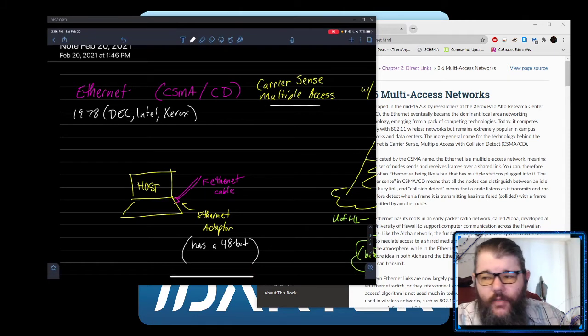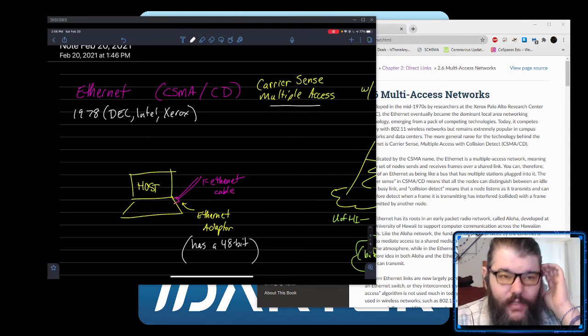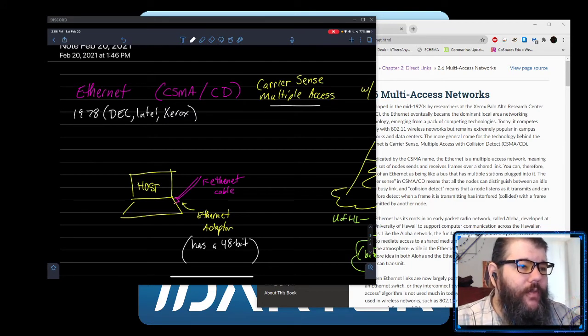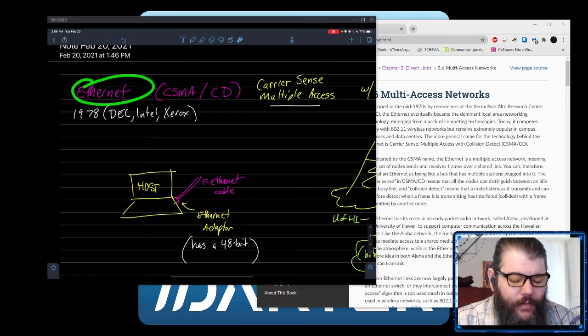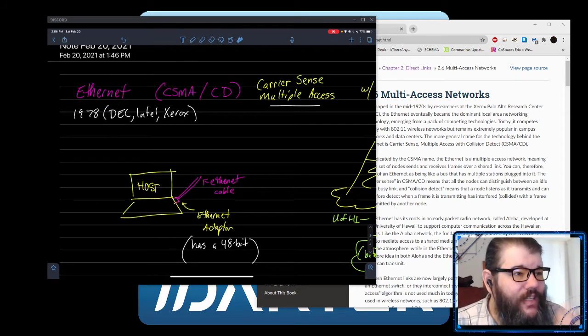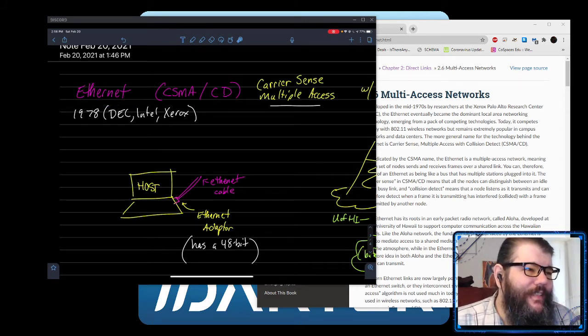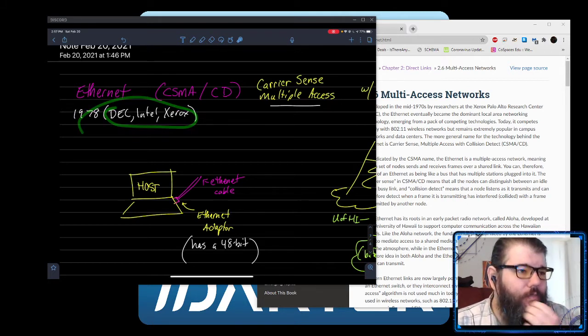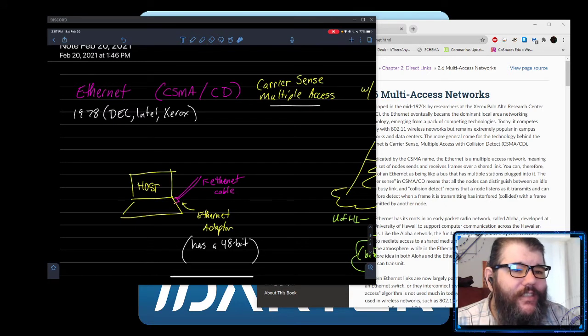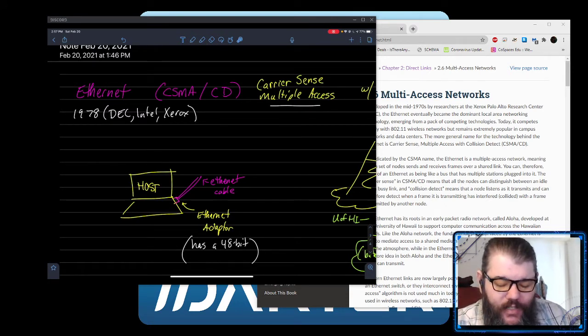All right, so let's look over here on my tablet. What we're going to be talking about today is how we put all of these framing things together in an actual protocol. Specifically, we're going to talk about Ethernet. Ethernet was developed in the mid-70s, the formal protocol came out in 1978 through a collaboration of three corporations: DEC, Intel, and Xerox.